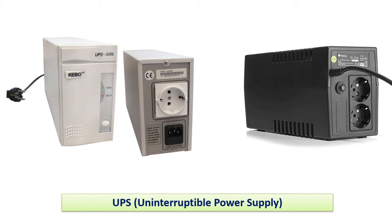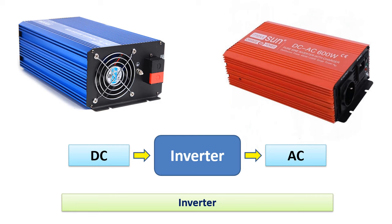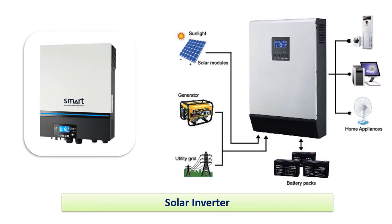IGBTs are also used in UPS, or uninterruptible power supply systems, that provide energy during power outages. UPSs store energy in batteries when there is electricity; when there is a power outage, the DC electricity in the batteries is converted to AC and used in electrical devices. Similarly, IGBTs are used in inverter circuits for power conversion, as well as in solar inverters that convert the energy from solar panels to be stored in batteries and then used in devices at home.